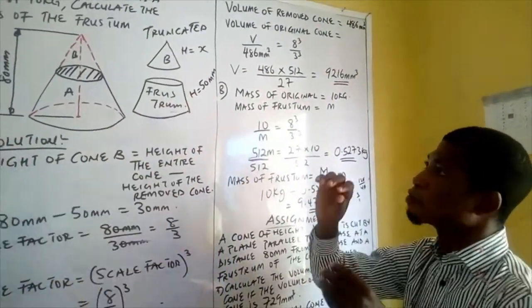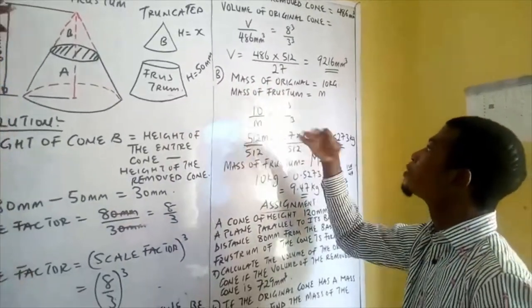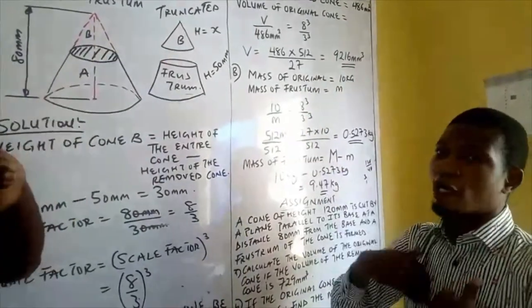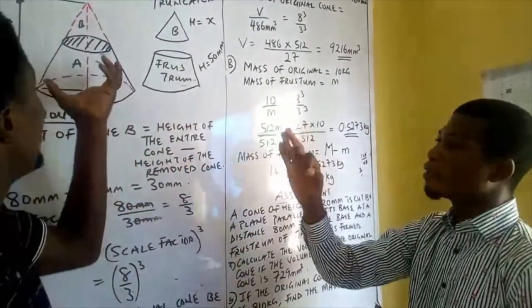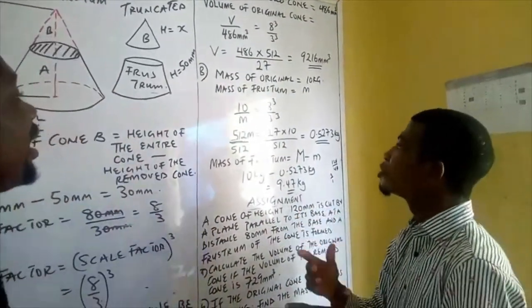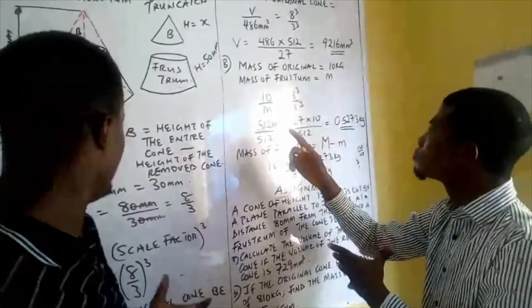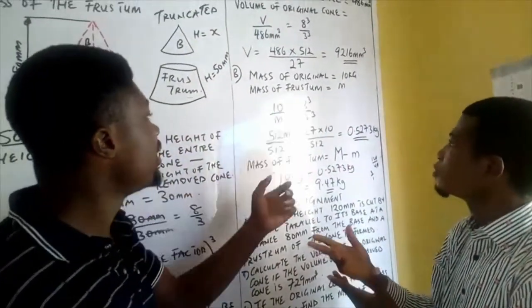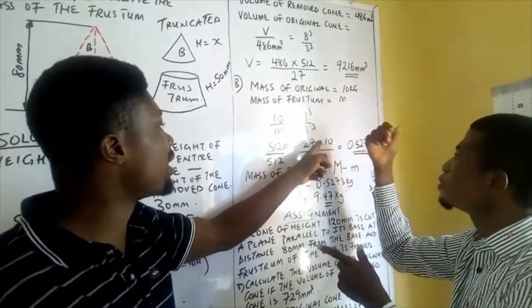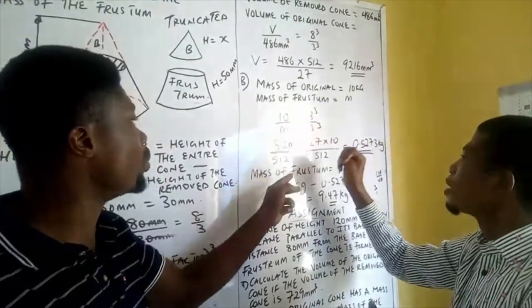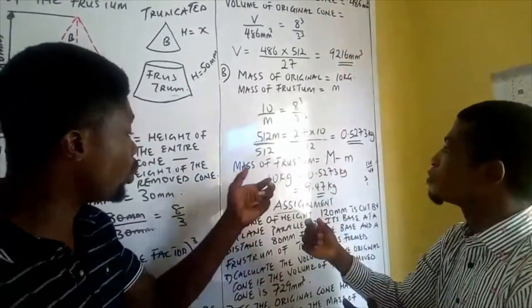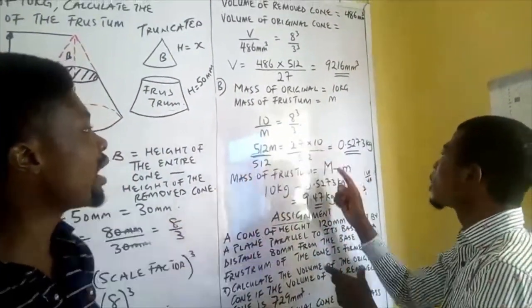The next step is the mass. If the mass of the original cone is 10 kilogram, and question B asks you to find the mass of the frustum, we equate with the scale factor and the volume factor. It gives us 10 times 27, which is 270, equals M times 512. Divide both sides by 512 gives you 0.5273 kilogram.